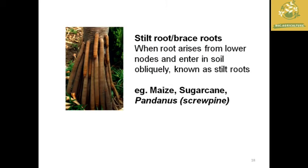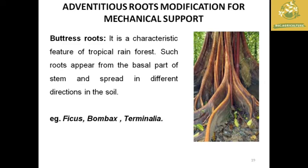Stilt roots or brace roots arise from lower nodes and enter the soil obliquely; examples: maize and sugarcane. Buttress roots are found in tropical rainforests — roots appear at the basal part of the stem and spread in different directions; examples: Ficus and Bombax.